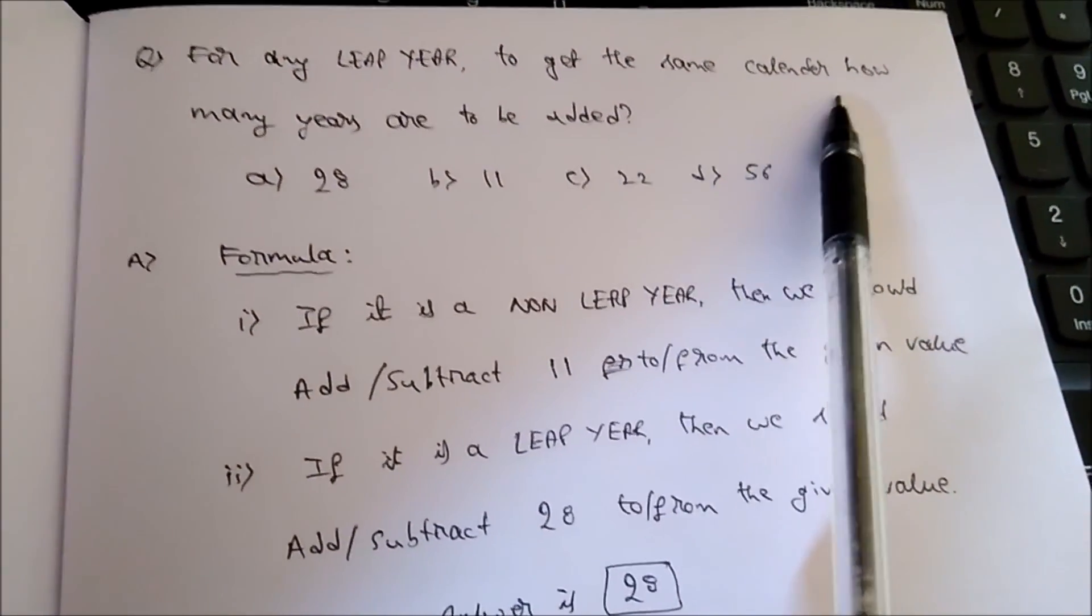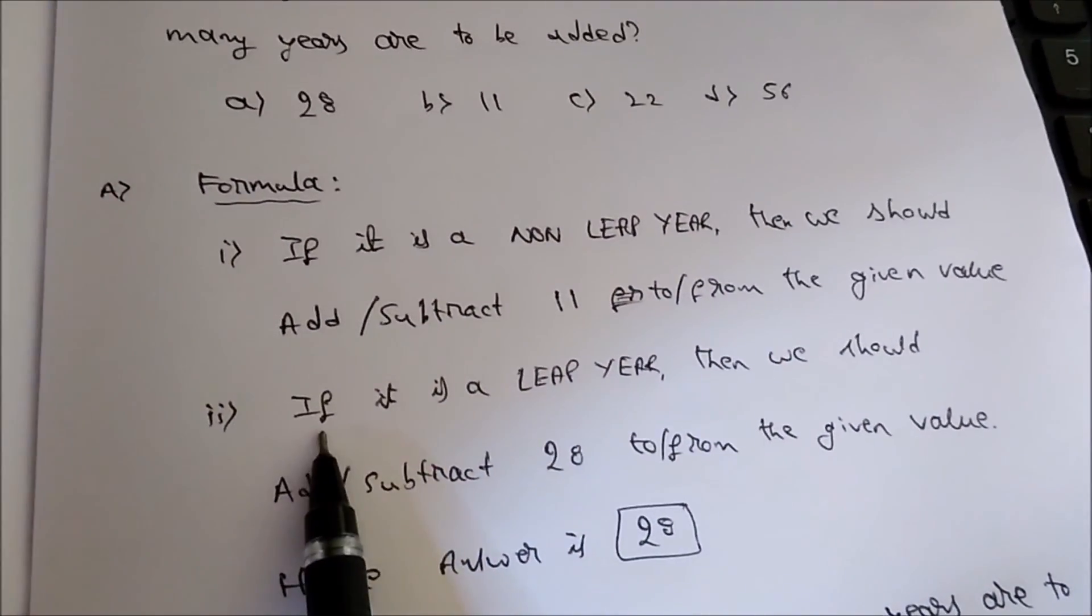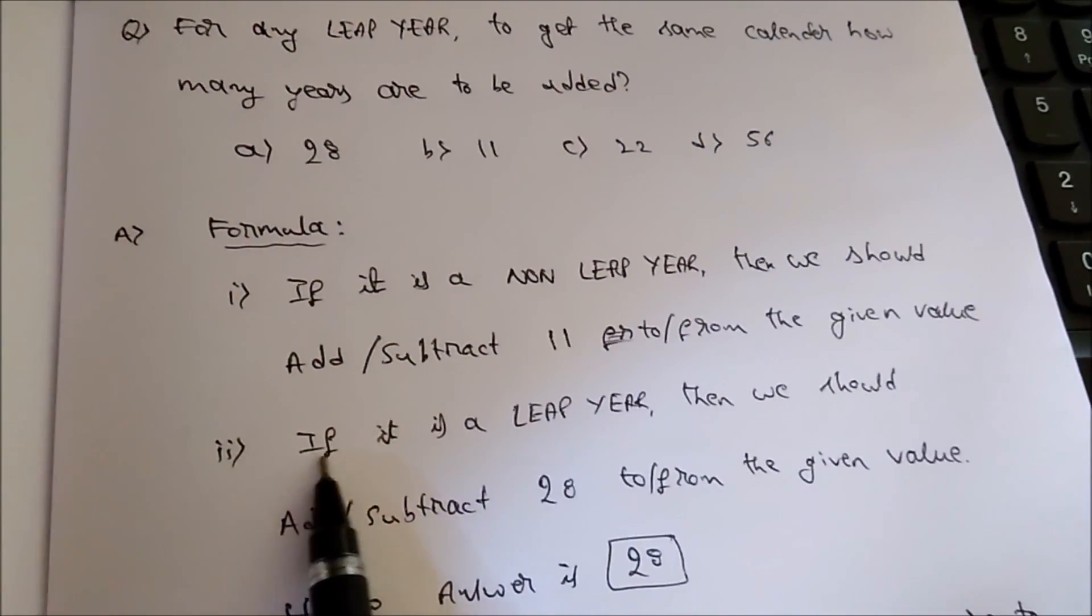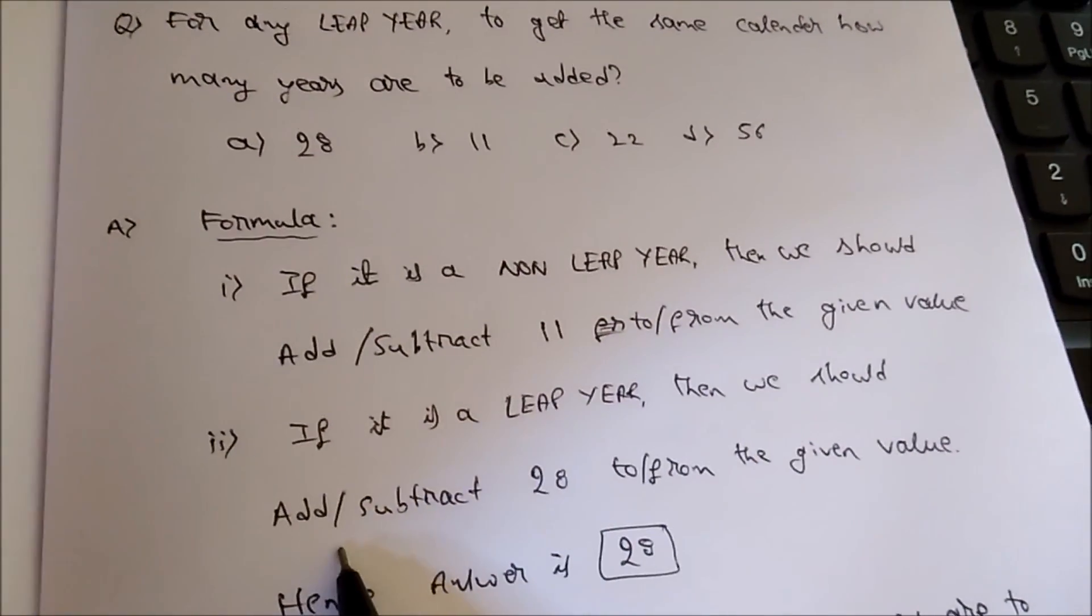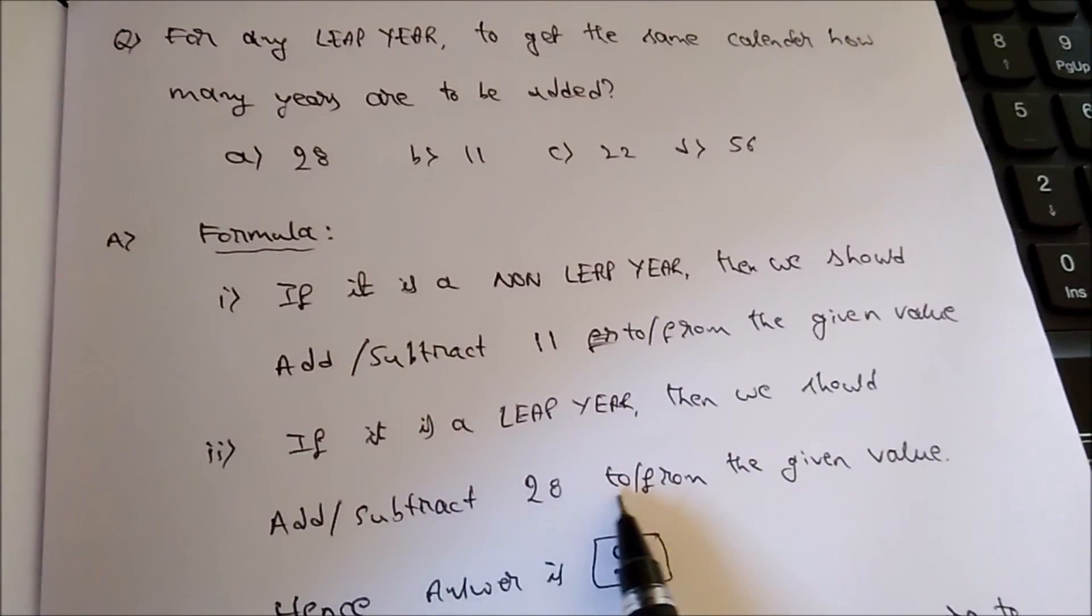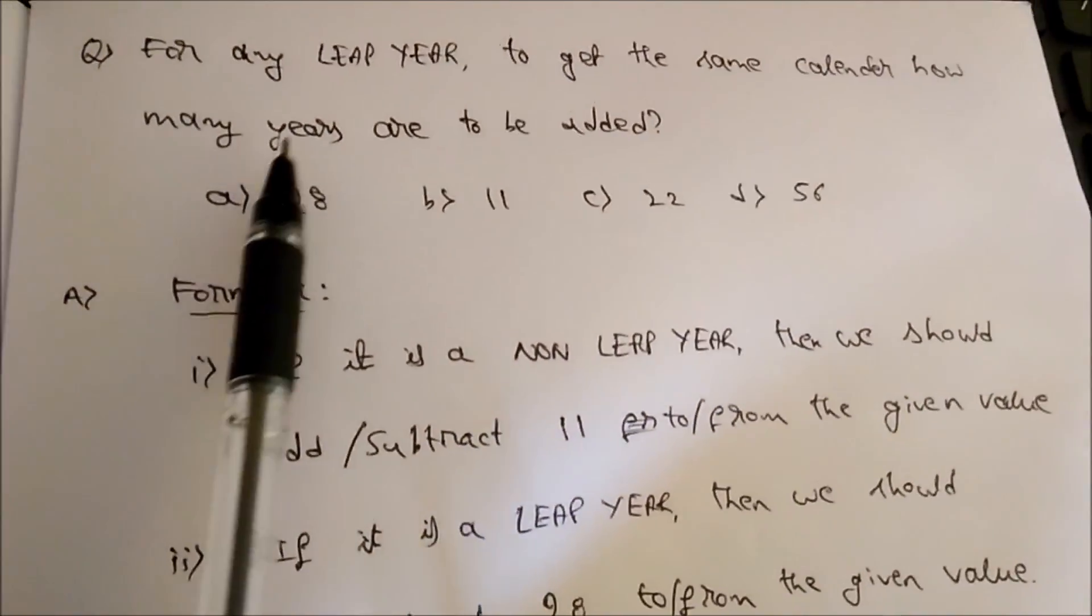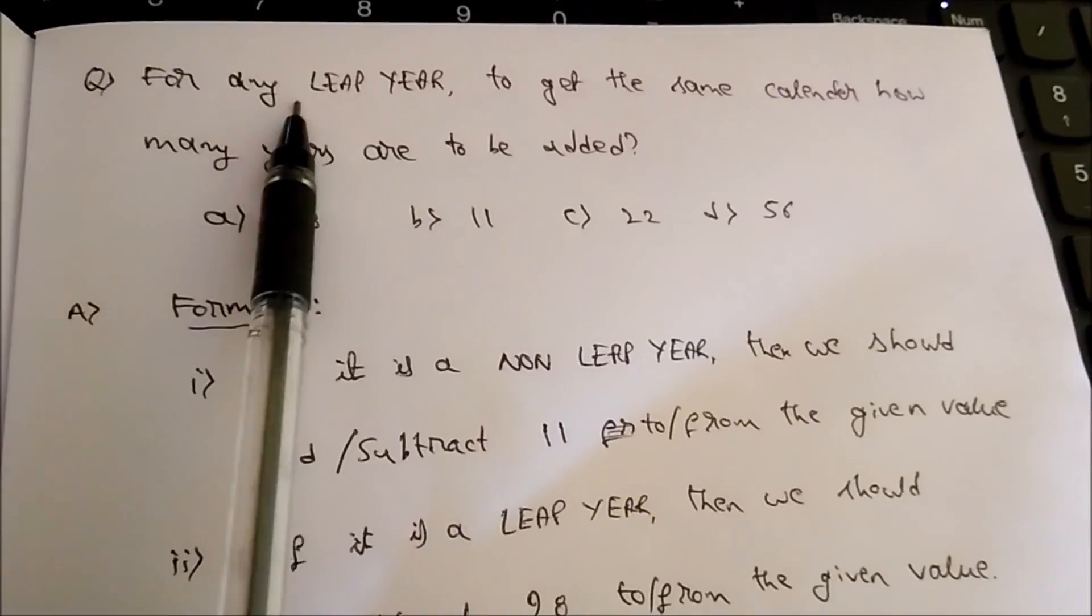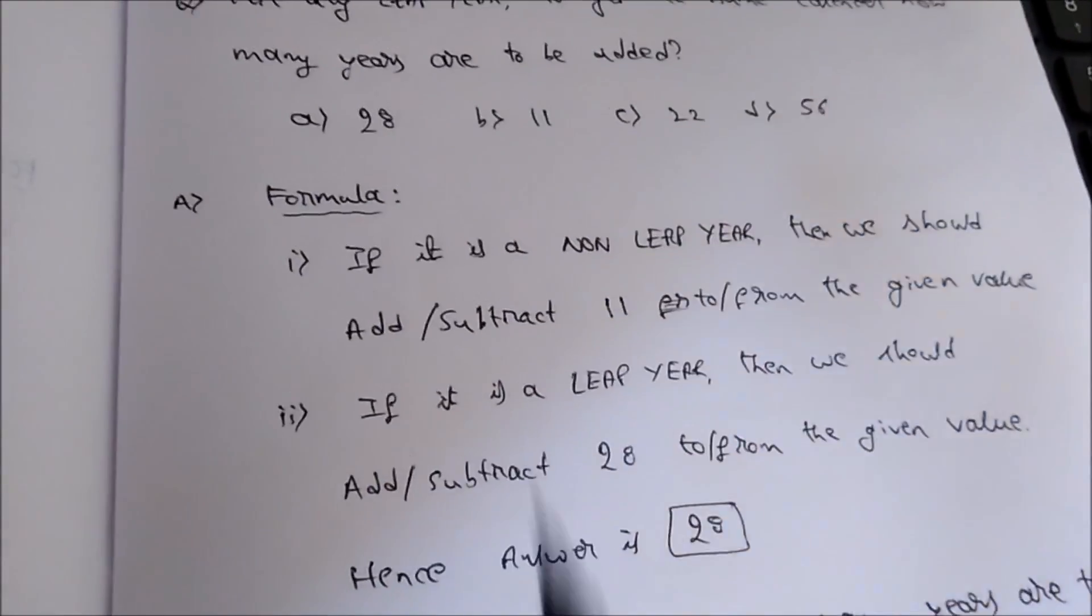The question is for any leap year to get the same calendar, how many years are to be added. So the second formula is applicable to this. If it is a leap year, then we should add or subtract 28 to or from the given value. So we need to add 28 to get the same leap year. Hence the answer is 28.